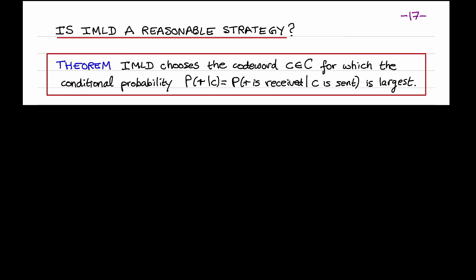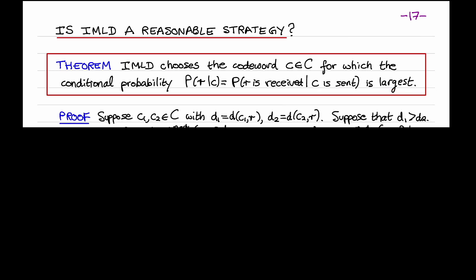We'll prove the following theorem. IMLD chooses the codeword C for which the conditional probability P(R|C) — defined to be the probability that R is received given that C is transmitted — is the largest. Let's prove this theorem.